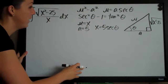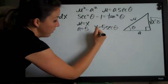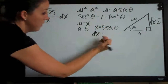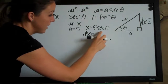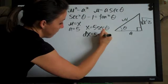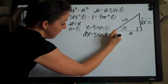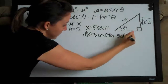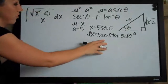Now that we've found x, we always take dx. The derivative of secant theta is secant theta tangent theta, and that's times d theta because we just took the derivative.